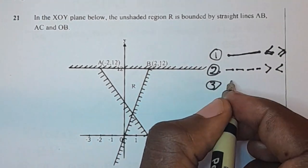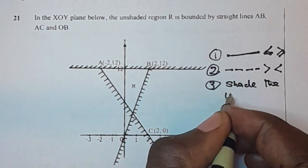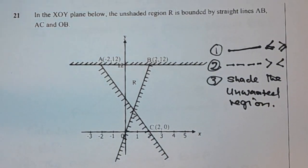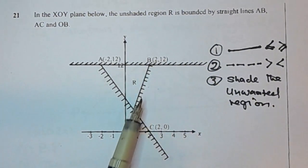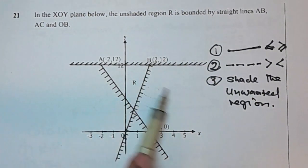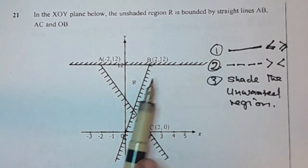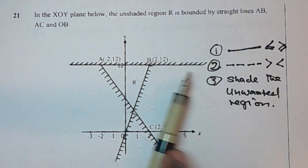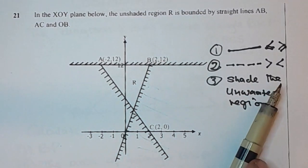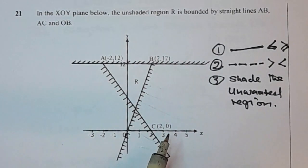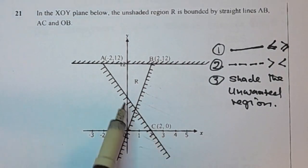Number three: we shade the unwanted region. For example, when you look at this line, the region that has been shaded is the greater part. So this greater part is the unwanted region. I will explain more on that in a moment.